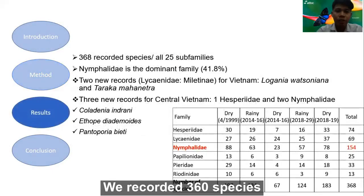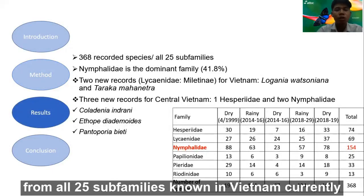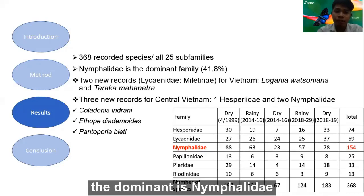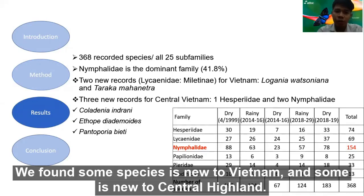We recorded 368 species from all 25 subfamilies known in Vietnam currently — that's almost as many species as in Australia. The dominant subfamily was Nymphalidae. We found some species new to Vietnam and some new to the Central Highlands.